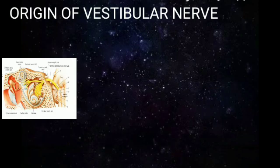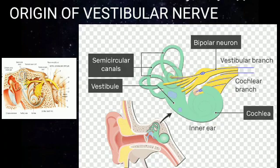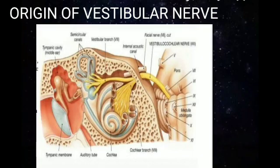The vestibular nerve begins in the vestibular ganglion. The bipolar neurons of this vestibular ganglion show two processes: a peripheral process and a central process. The peripheral process passes through the foramina in the lateral end of the internal acoustic meatus and supplies the cristae ampullaris and the maculae. The central process, that is the axons of these bipolar cells, forms the trunk of the vestibular nerve and passes through the internal acoustic meatus.